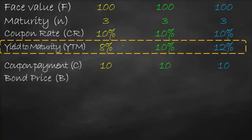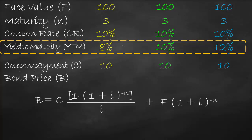Next we need to calculate the bond price. The formula for bond price is the present value of ordinary annuity plus the present value of a single cash flow. That is: coupon × [1 − (1 + YTM)^(−N)] / YTM, plus face value × (1 + YTM)^(−N).